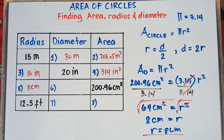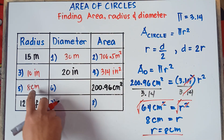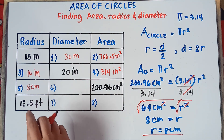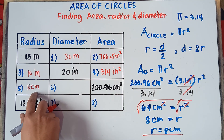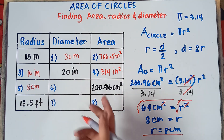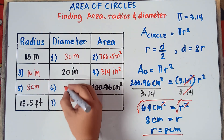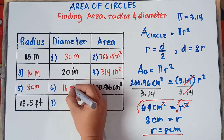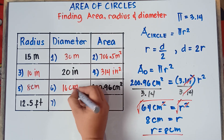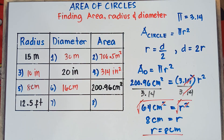Therefore, the diameter is simply the radius times 2. So 8 centimeters times 2 equals 16 centimeters. That's it — all set.